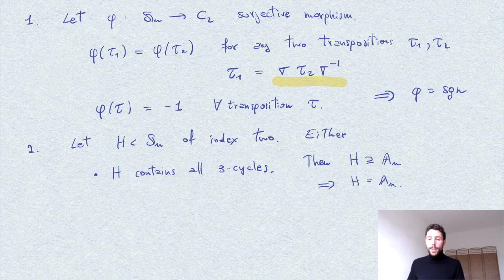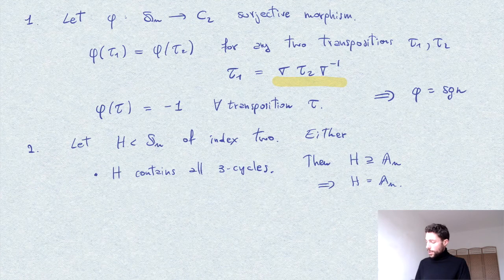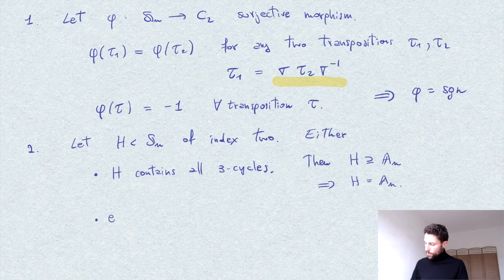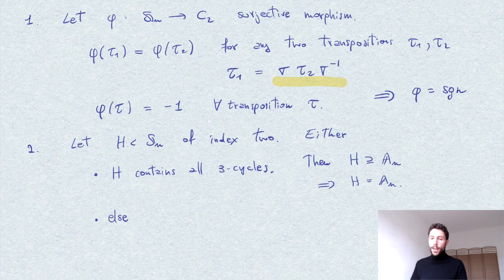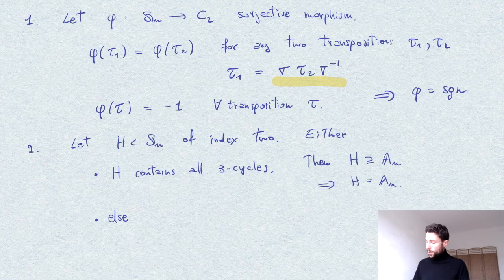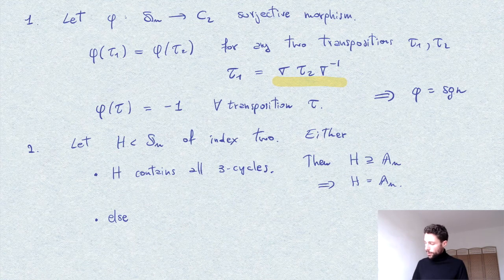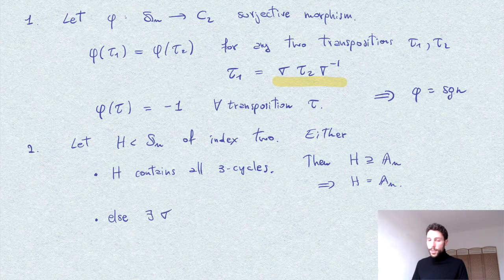Now the other possibility is that H doesn't contain all three cycles. In other words, there exists some three cycle, some cycle of length three, say sigma, which is not in H.